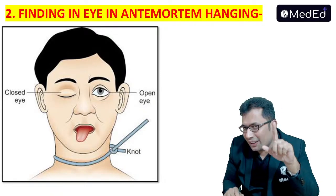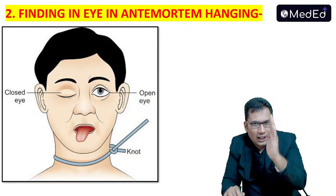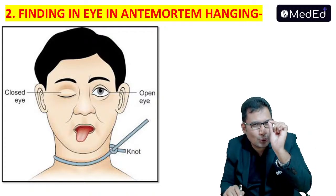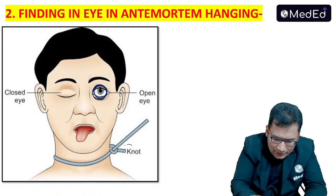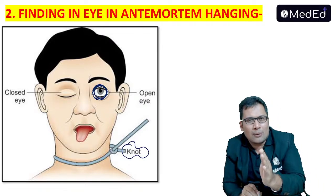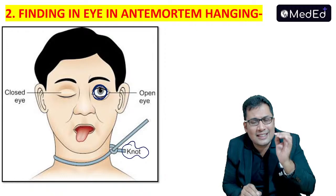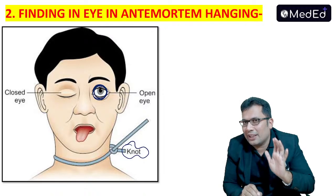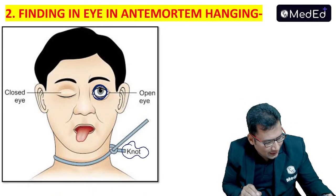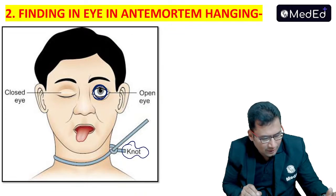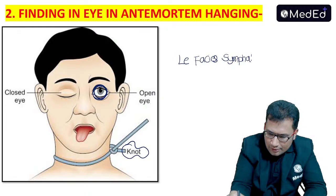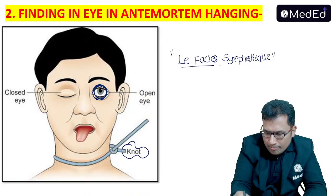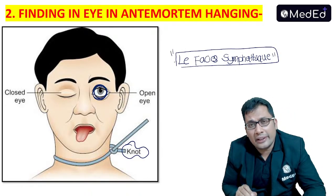Remember, in case of antemortem hanging you will see one more finding where one eye is open and the other is closed, and the pupil is more dilated on the same side as the open eye. On the same side of the knot, because of pressure over the cervical sympathetic chain, the eye remains open and the pupil is more dilated. This finding is seen in 10 to 15% of cases in antemortem hanging.